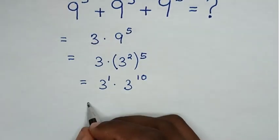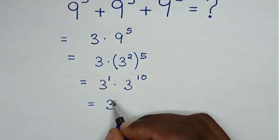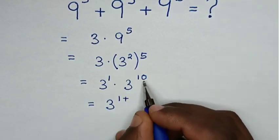Then it will be equal to - in here is multiplication of exponents with the same base, so it will be 3 to the power of 1 plus power of 10.